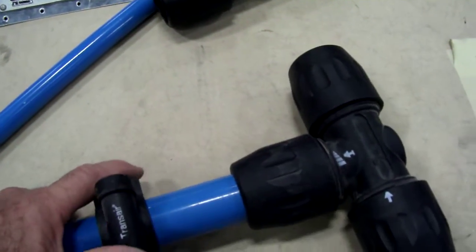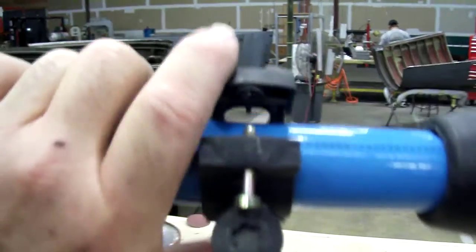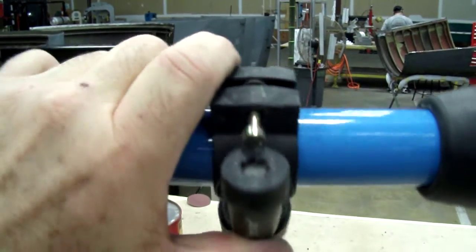You just clamp it around it, and then you have your drop. You tighten the screw, and that seals it completely.